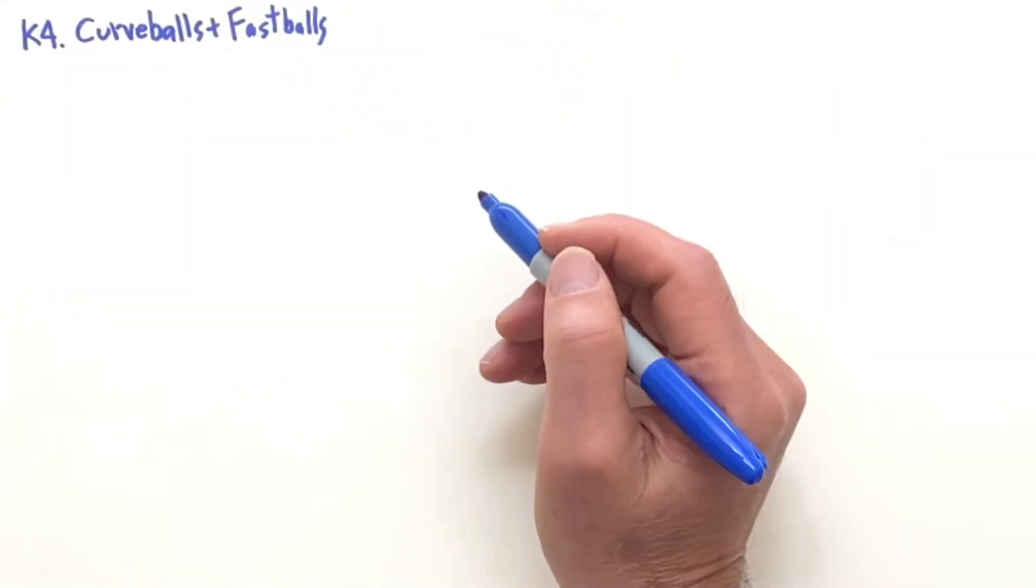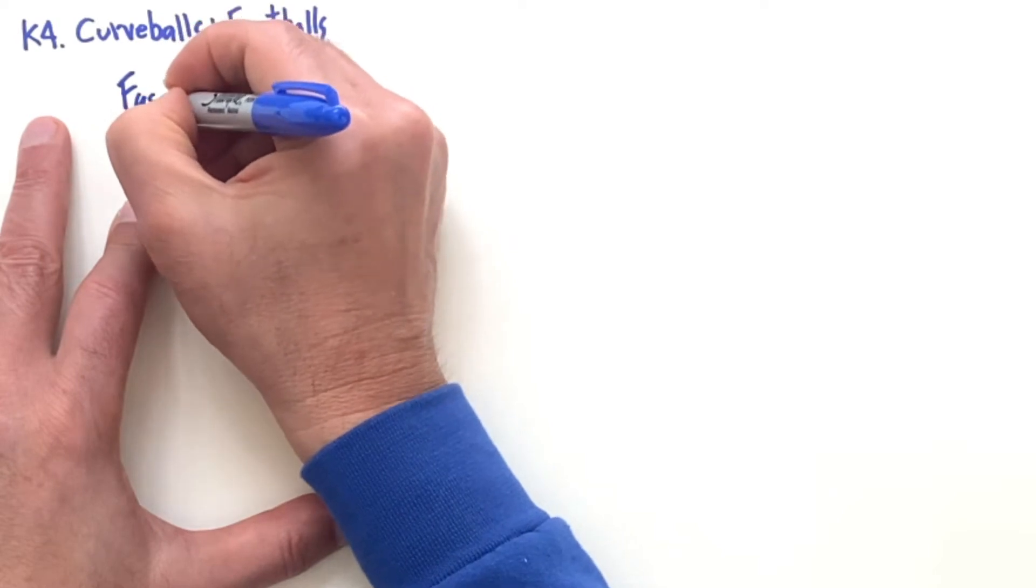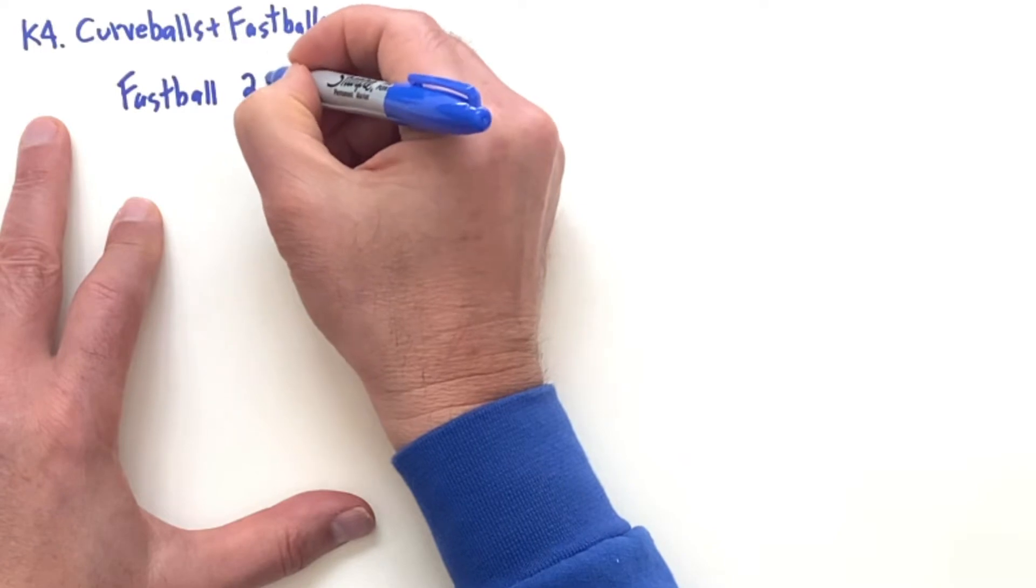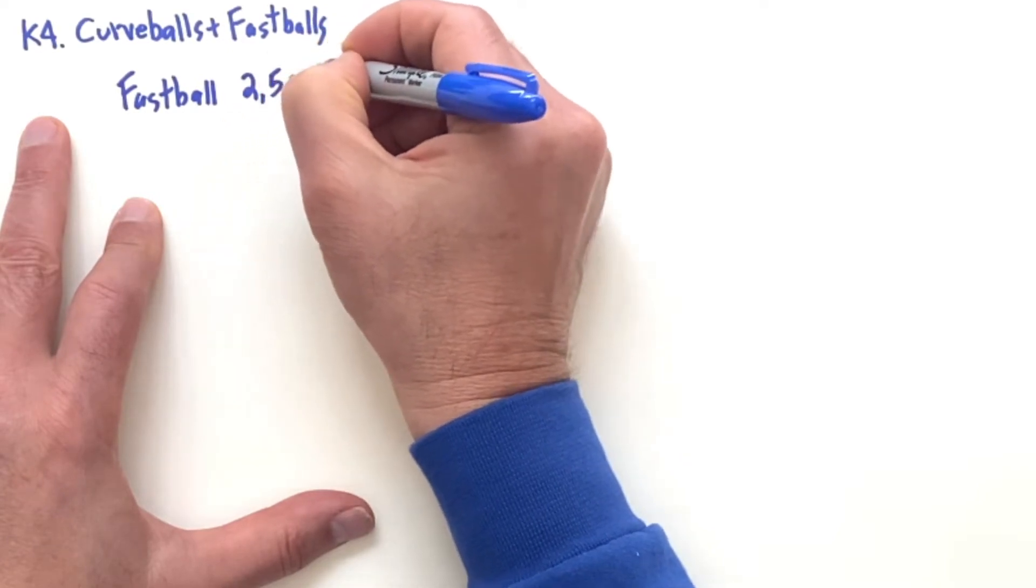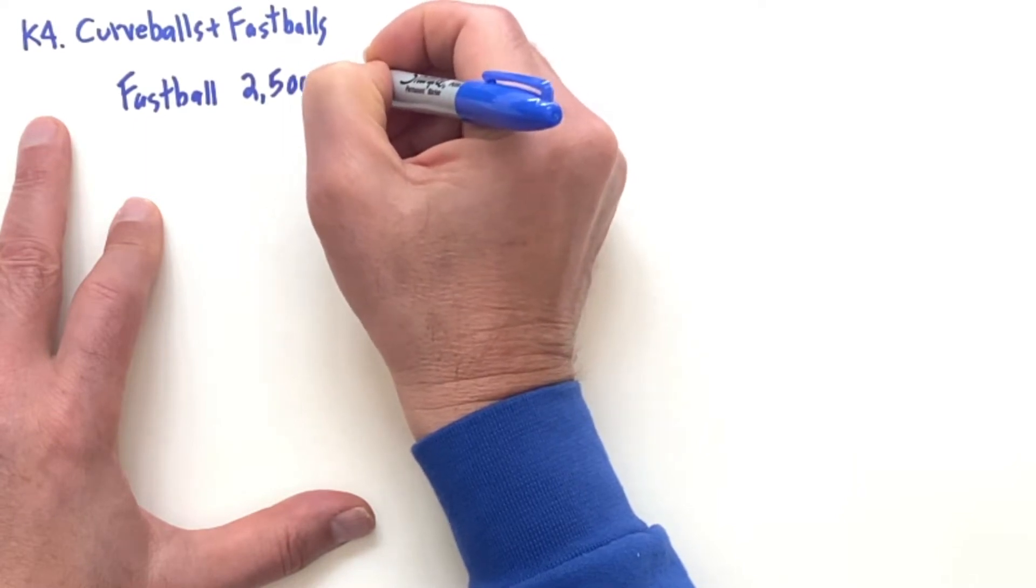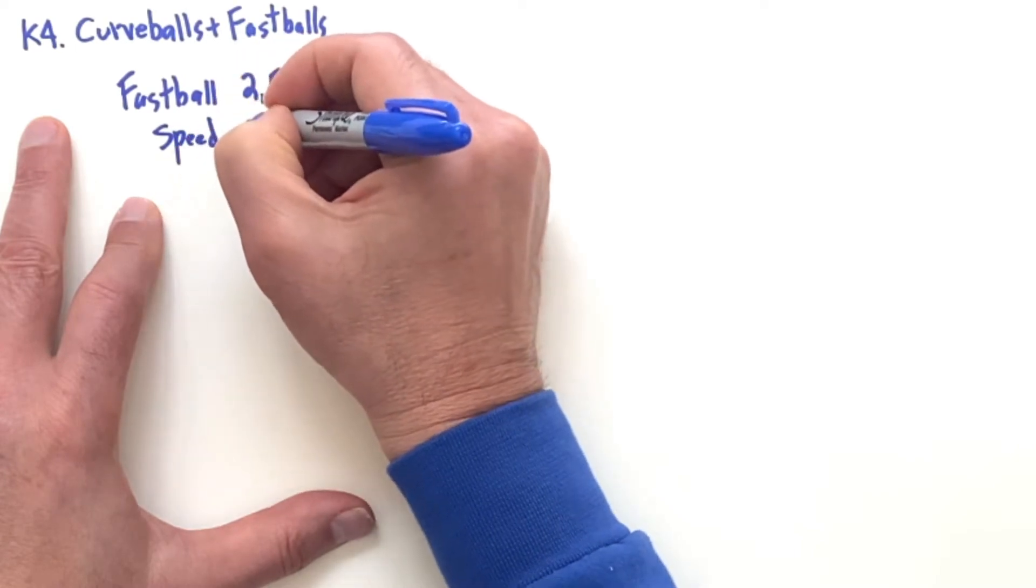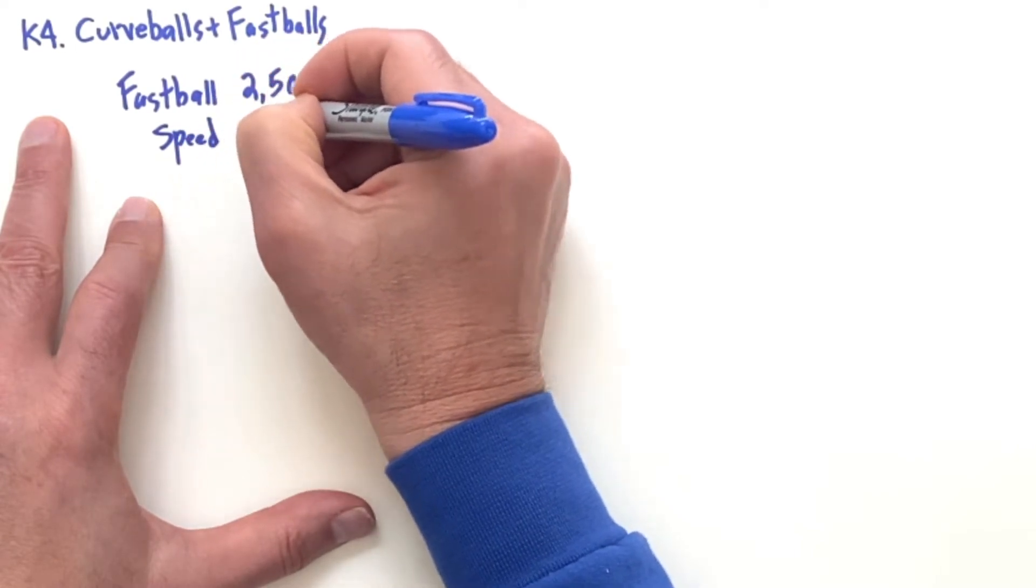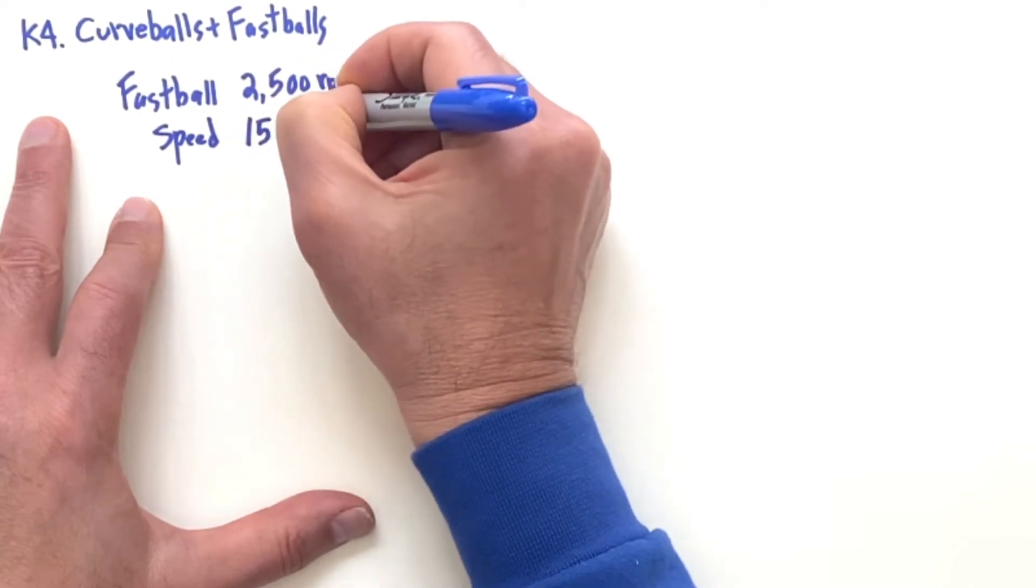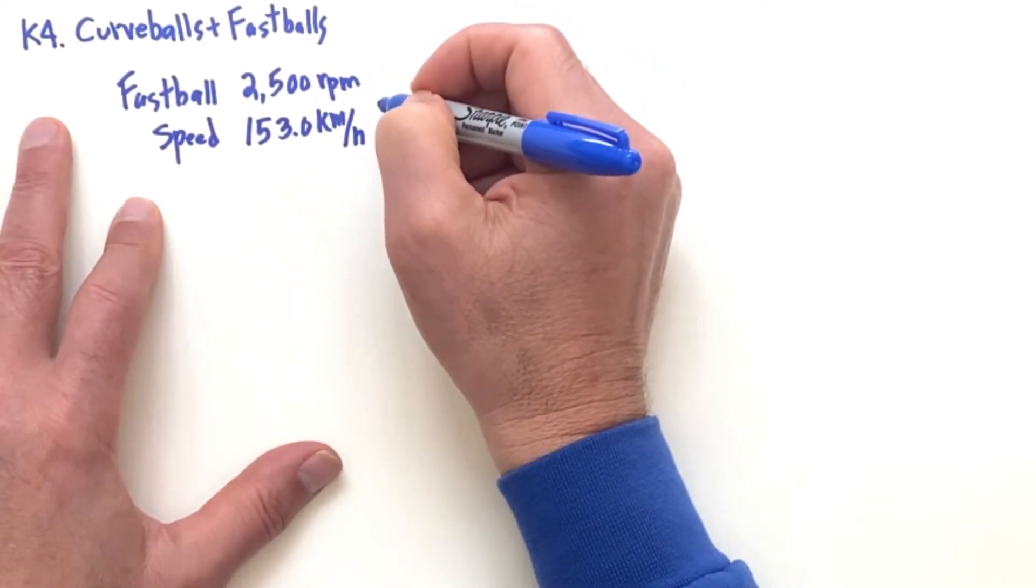So let's get some data here. For a fastball in the major leagues, a good fastball will spin 2500 RPMs, that's rotations per minute, and the speed of a fastball, typical speed, 153 kilometers per hour. It's about 95 miles per hour.